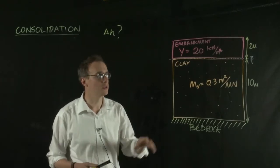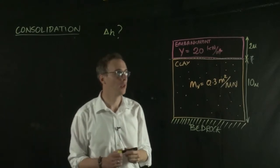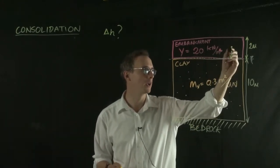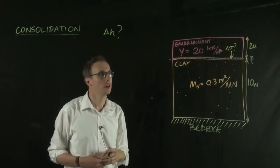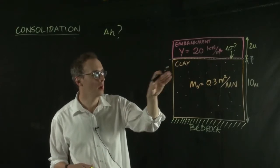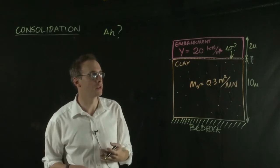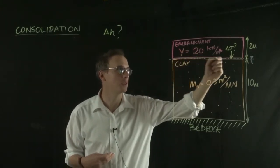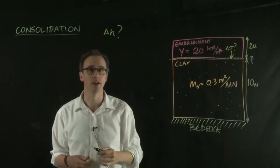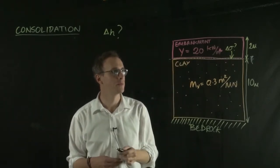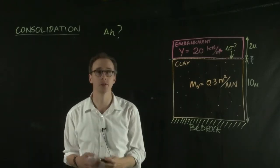Well, the first thing we need to do is calculate what the change in stress is on the top of this clay layer. What is the stress caused by the embankment at this point? To do that, we calculate the stress almost like we were treating this embankment as a layer of soil, as we did in previous videos. We take the unit weight in kilonewtons per meter cubed and multiply that by its thickness of 2 meters.